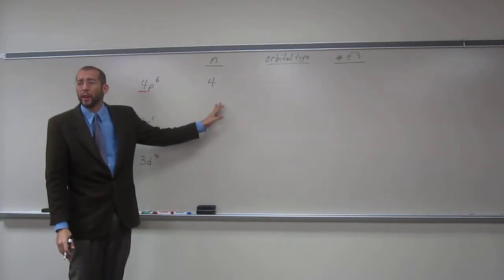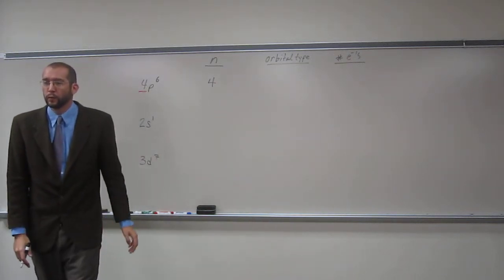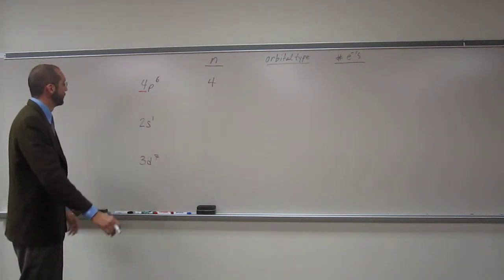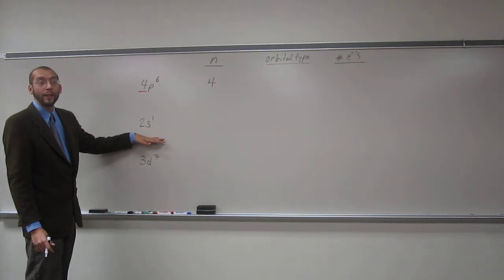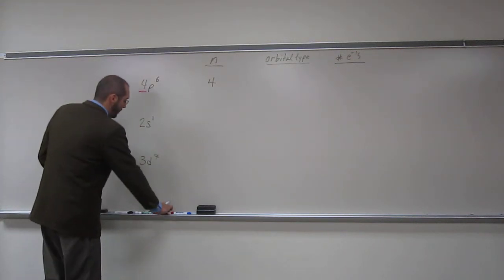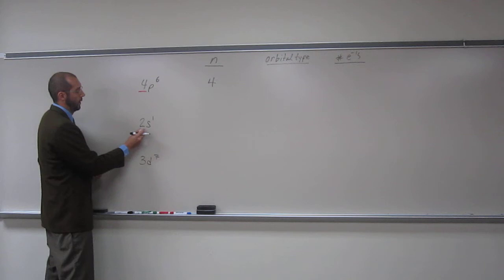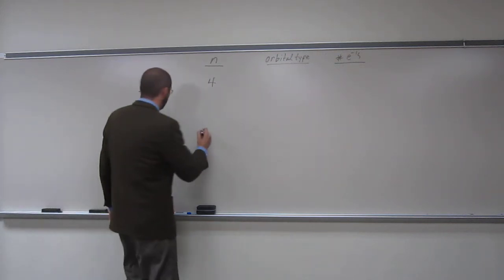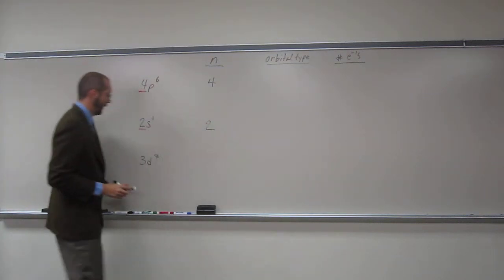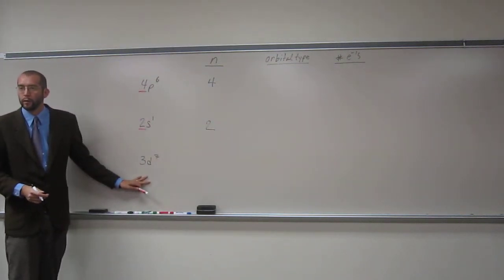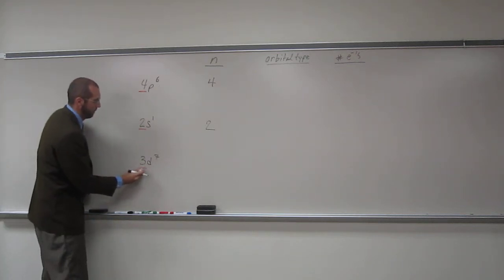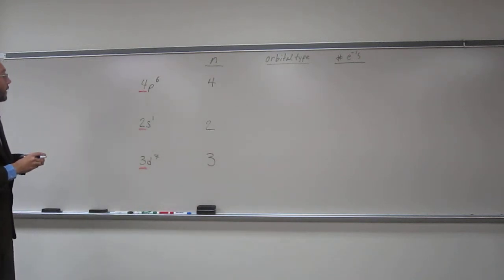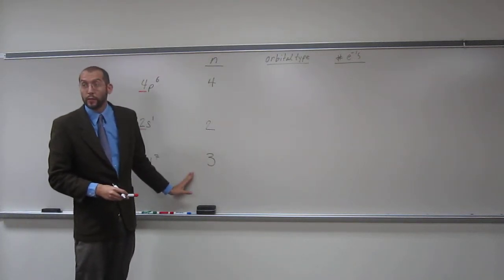So it's on the fourth energy level is what we're really seeing, the electrons within this orbital or this set of orbitals. So here, right, is on the second energy level, how do I know that? Because there's a 2 in front of that. And then what would this one be? 3, right? So that's the energy level that these things are.